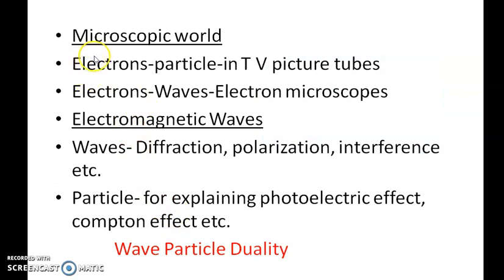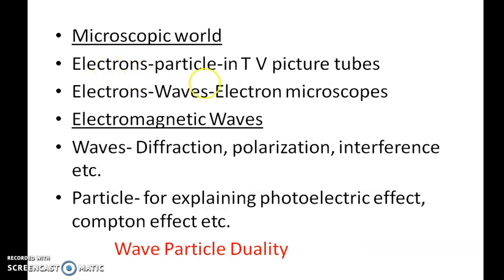But when we go to the microscopic world, in the realm of atoms — for example, taking electrons — we treat electrons as particles because they have mass and charge and they obey the laws of particle mechanics in television picture tubes, etc. But in order to explain the behavior of electrons in an electron microscope, we have to treat them as waves. So in the microscopic world, microscopic particles have got both particle and wave nature.